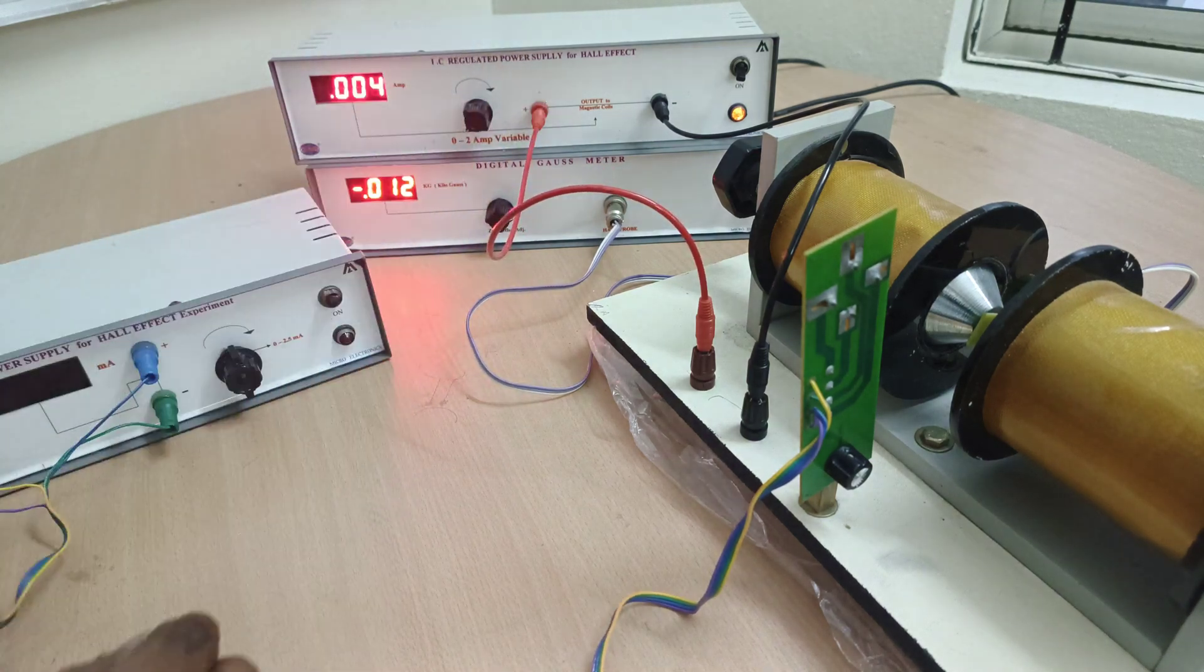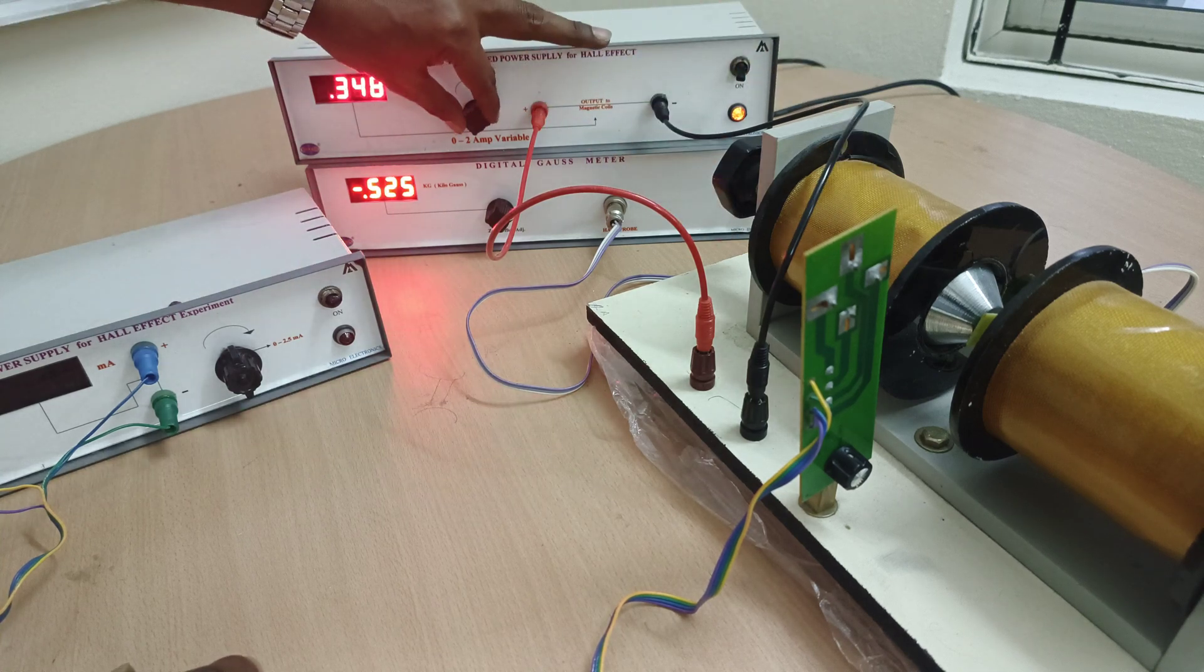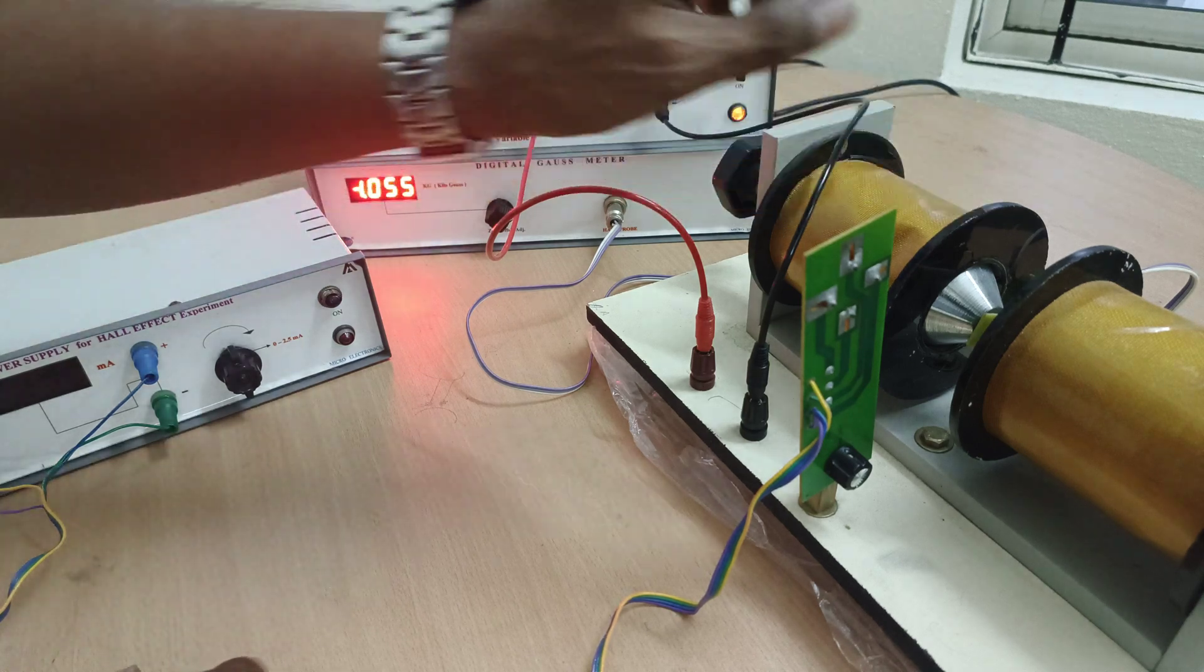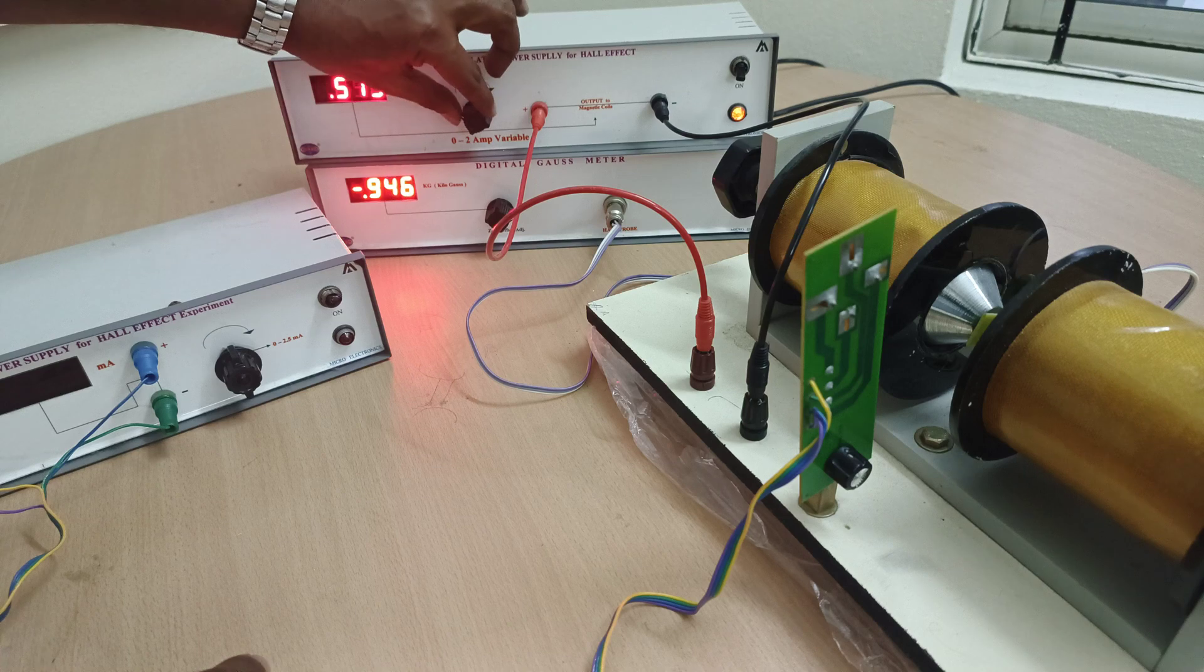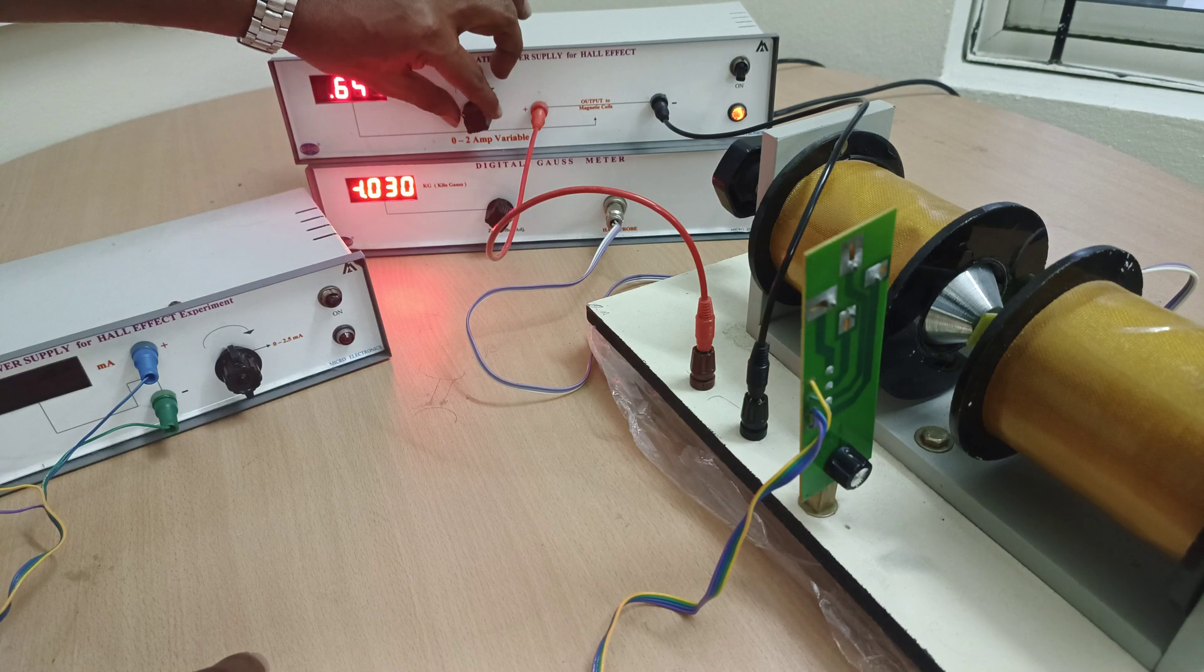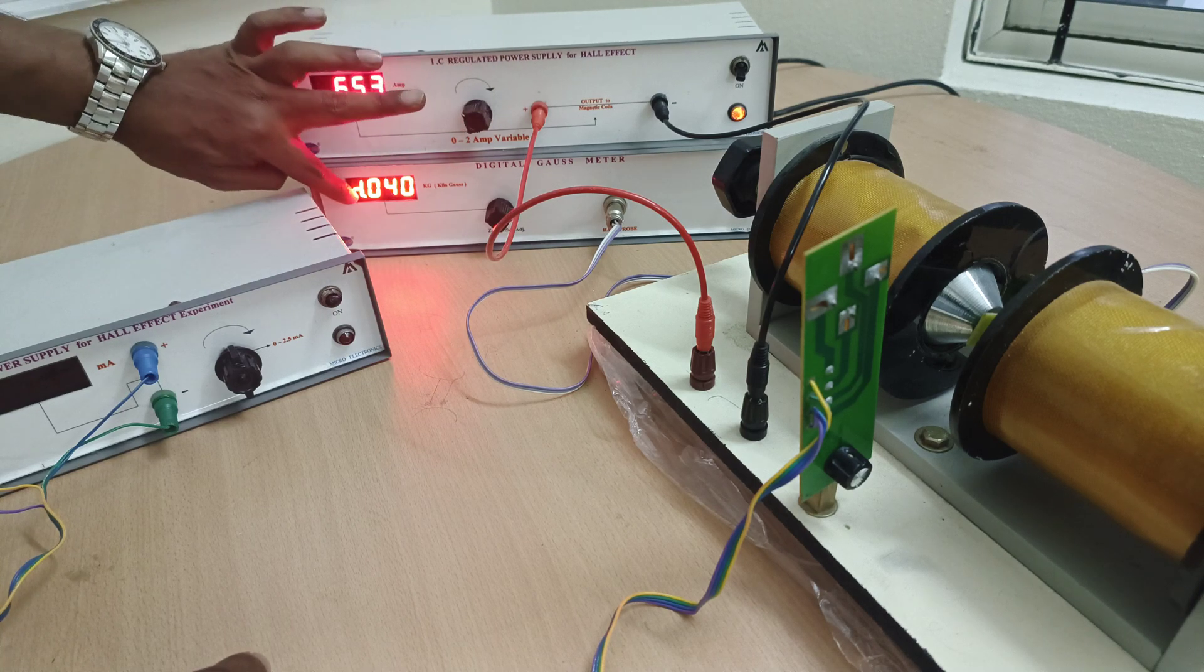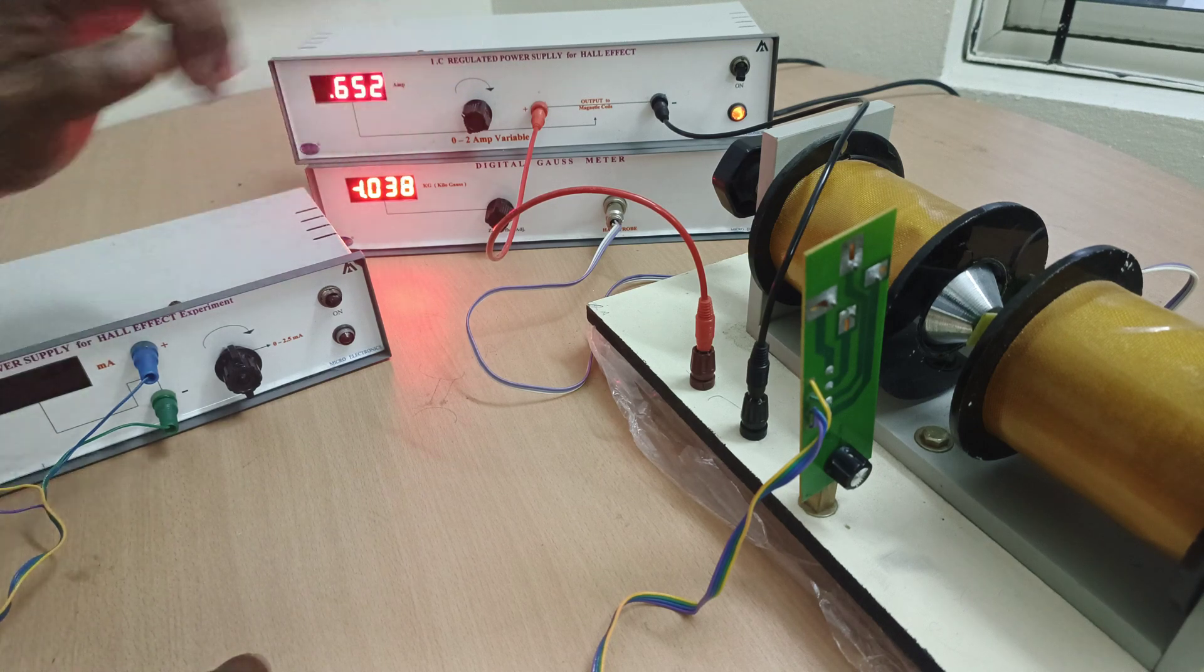By increasing the current in the electromagnets, the magnetic field will increase. Make it one kilogauss. Don't worry whether it is showing negative or positive. This is approximately 1.0 means thousand gauss or one kilogauss.